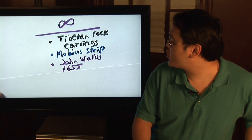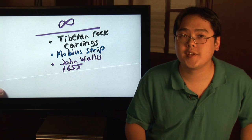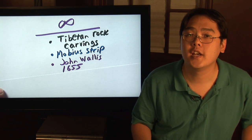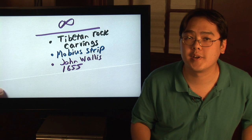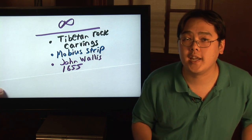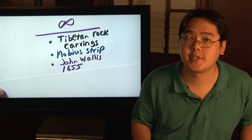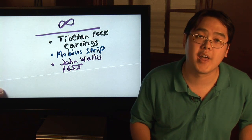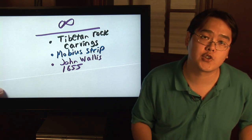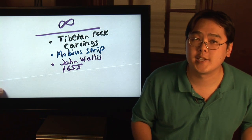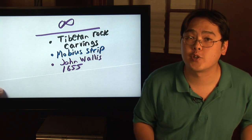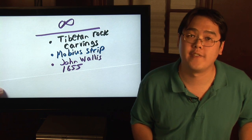But it was John Wallis who, in 1655, introduced the idea of infinity for that particular symbol, and that's where it came from officially. Some thought he was inspired to use that particular symbol from the Roman numeral for a thousand, or the Greek letter Omega, but no one really knows for sure. John Wallis has been widely credited with introducing this particular symbol to use for infinity.